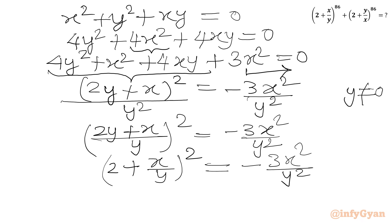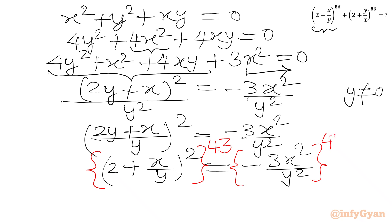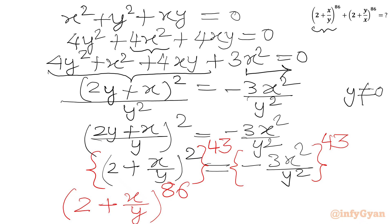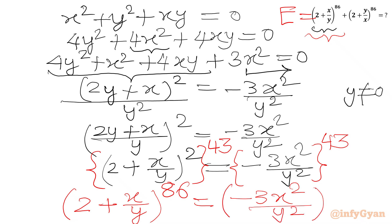Now we can see that (2 + x/y) is present in our expression with power 86. So we raise both sides to the power 43 again. Using the exponent law, (2 + x/y)^86 equals (−3x²/y²) raised to the power 43.